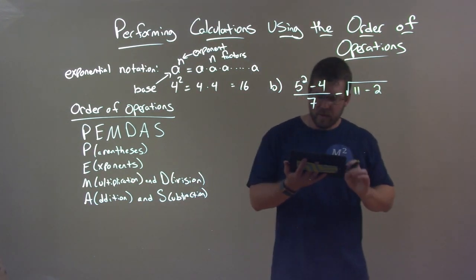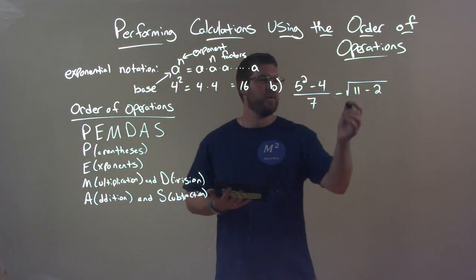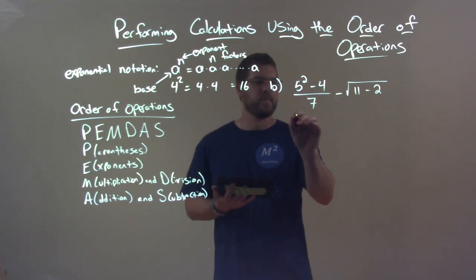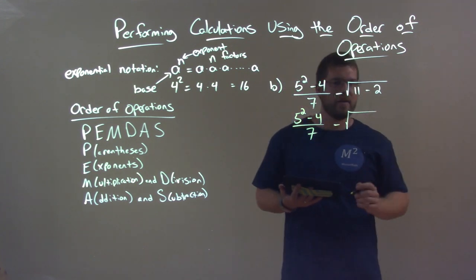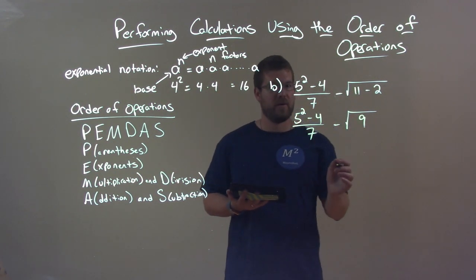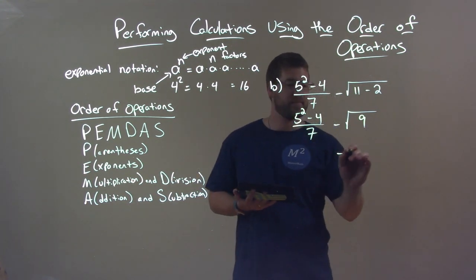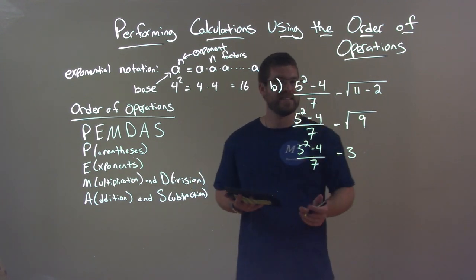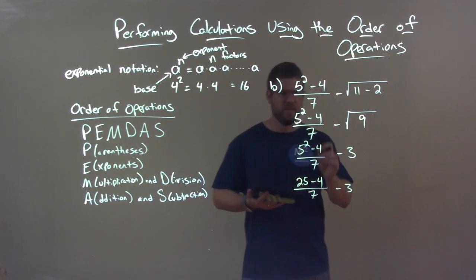The first step: the square root is really like a parentheses with an exponent — we know square root is taking something to the 1/2 power. So we need to simplify within that square root first. We have 5 squared minus 4 over 7 on the outside. Inside the square root, 11 minus 2 comes out to be 9. Then we simplify the square root — that's our exponent step — and square root of 9 is 3. Bringing down 5 squared minus 4 over 7, and 5 squared is 25. So we have 25 minus 4 over 7 minus 3.